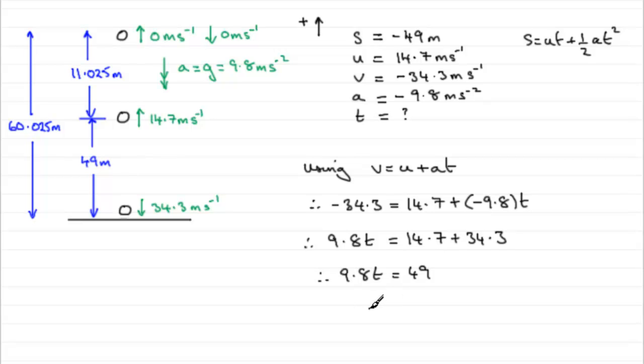And you end up with an exact result, T equaling 5. Five seconds then it takes for that ball to go from here, up there, and back down again. So very easy if you always adopt this kind of procedure of looking at the overall displacement.